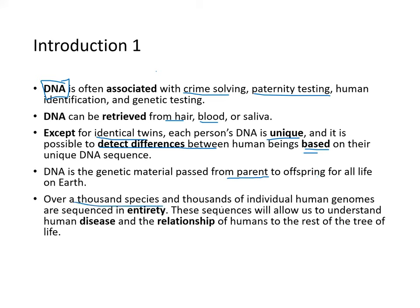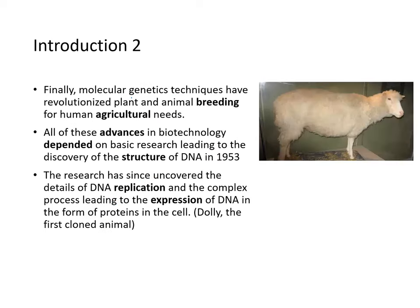Over 1,000 species and 1,000 individual human genomes have been sequenced in their entirety. These sequences allow us to understand human diseases and the relationship of humans to the rest of the tree of life. Molecular genetics techniques have revolutionized plant and animal breeding for agricultural needs — this is where GMOs, genetically modified organisms, come from.